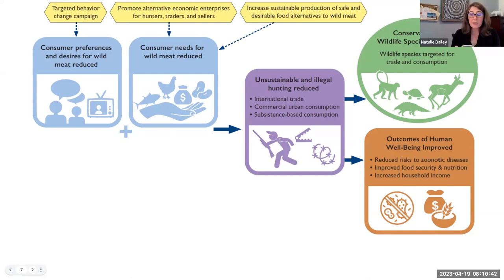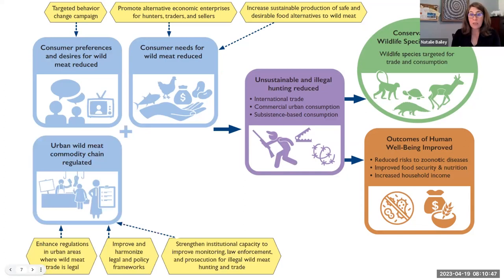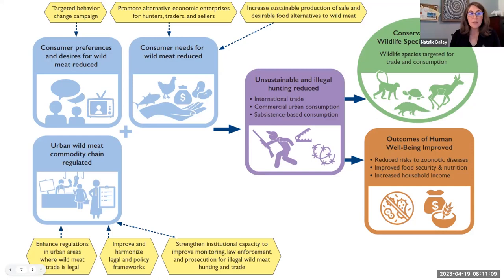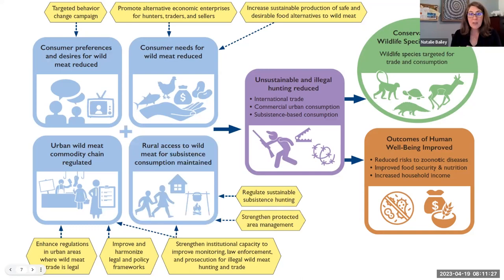In some places, there is a legal urban wild meat commodity chain. In markets in many countries in Asia, it is legal to sell wildlife in markets — maybe not wildlife from protected species or protected areas, but it does happen. So how do we tease apart what is legal and what is not? This is where we get into regulations, policy, and legal frameworks, as well as strengthening law enforcement and monitoring. The final key result is ensuring that rural sustainable subsistence access is maintained. If local people are going to protect their own resources, they need to have tenure and be able to keep other people out.